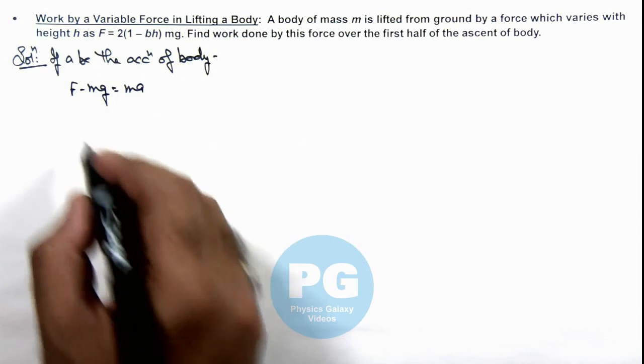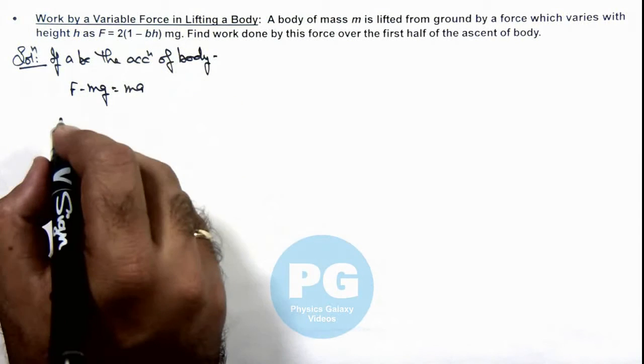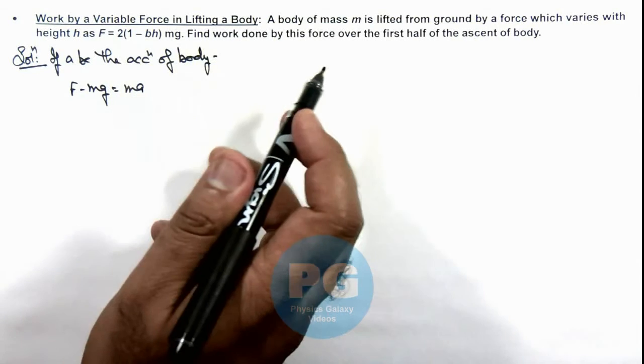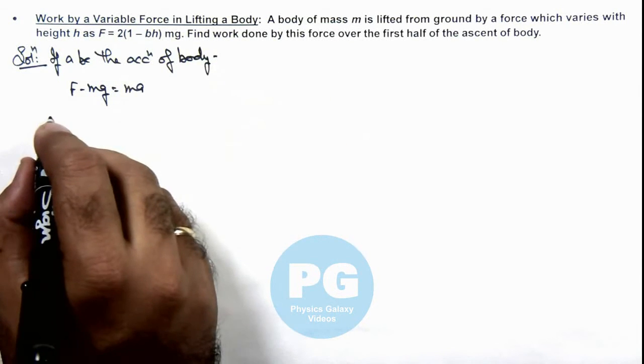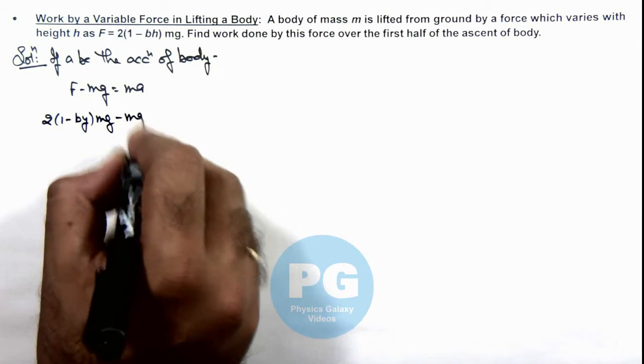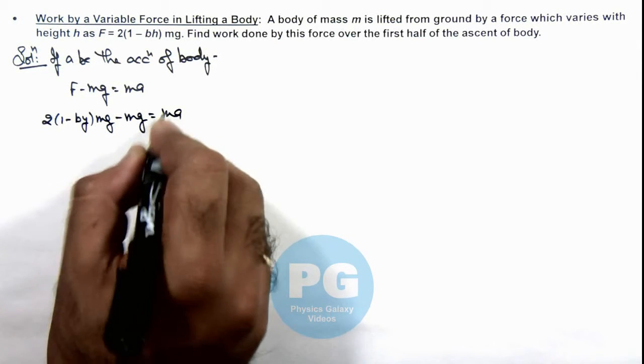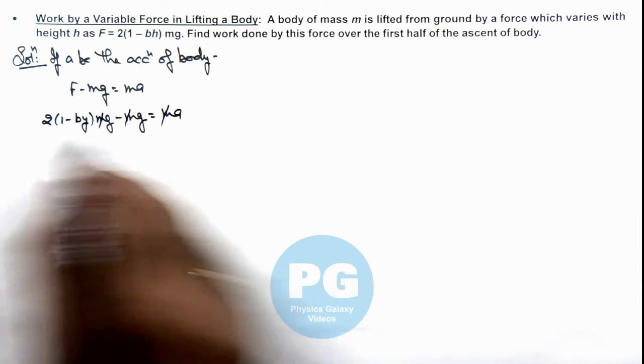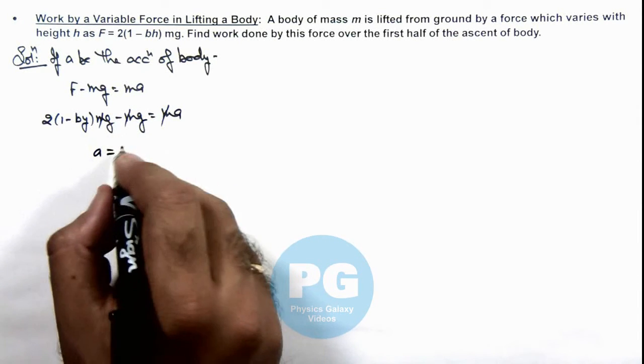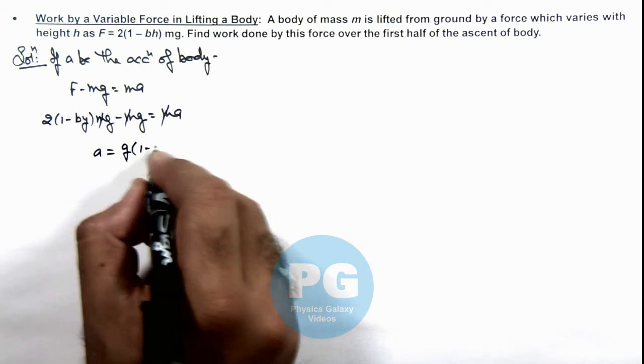If we substitute the value of F, the height of ascent of body at any time is y, so this is 2(1 - by)mg - mg = may. Here m gets cancelled out and further simplifying we are getting the value of acceleration as g(1 - 2by).